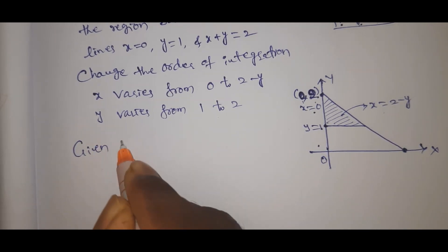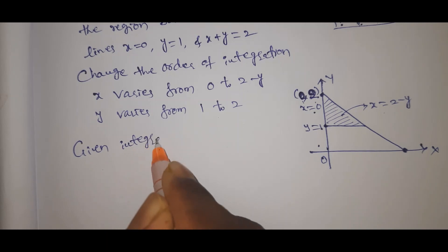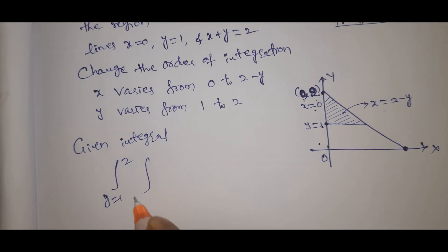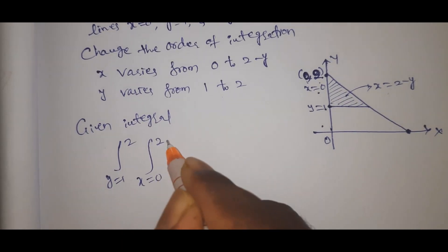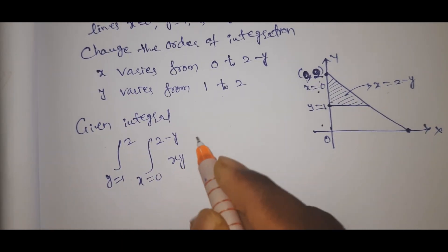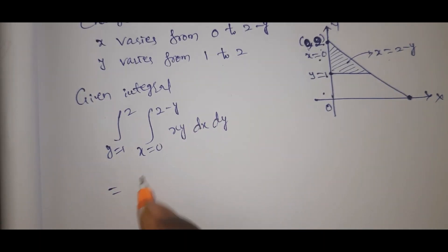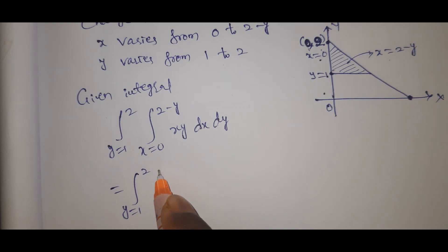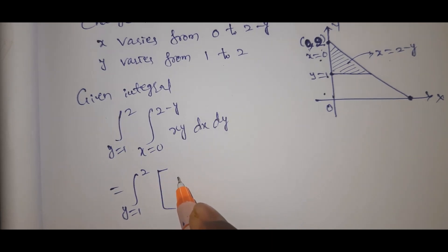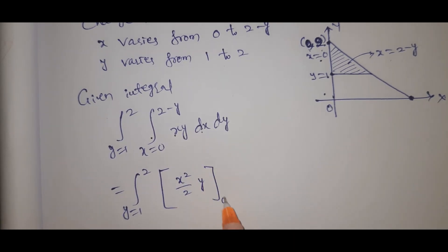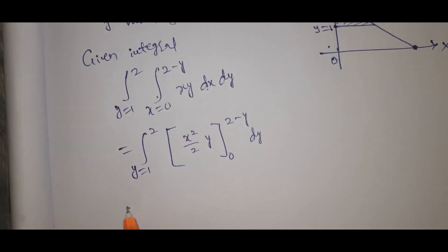So the given integral becomes: integral y equal to 1 to 2, x equal to 0 to 2 minus y, xy dx dy. That equals integral y equal to 1 to 2, of x squared by 2 into y, evaluated from 0 to 2 minus y, dy.